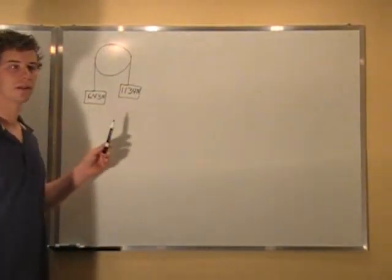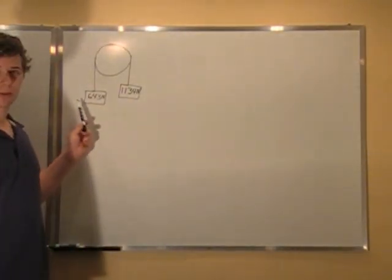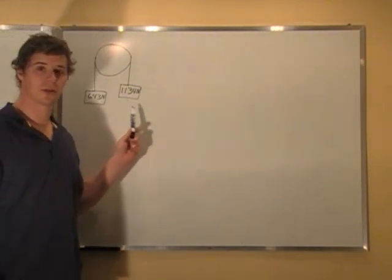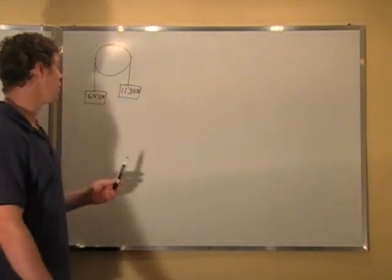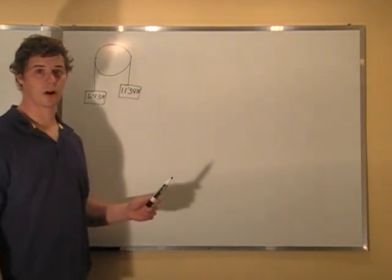Two blocks are connected over a pulley. One is 643 newtons and the other one is 1134 newtons. Now what we have to figure out is what is the acceleration of both these blocks.